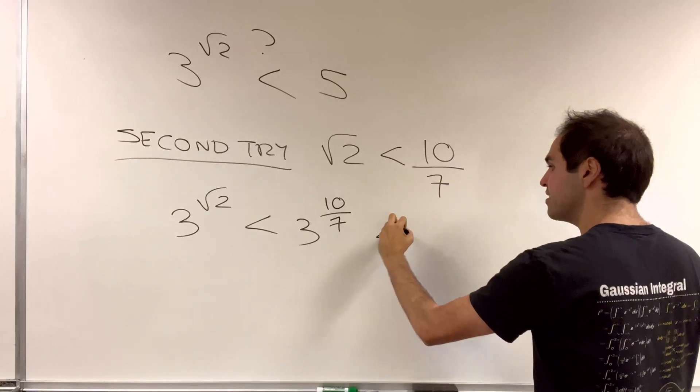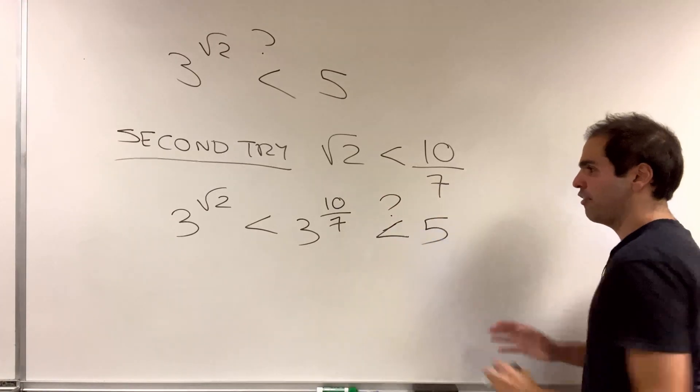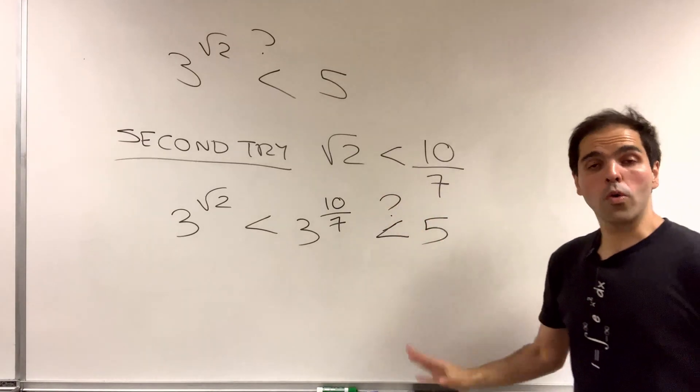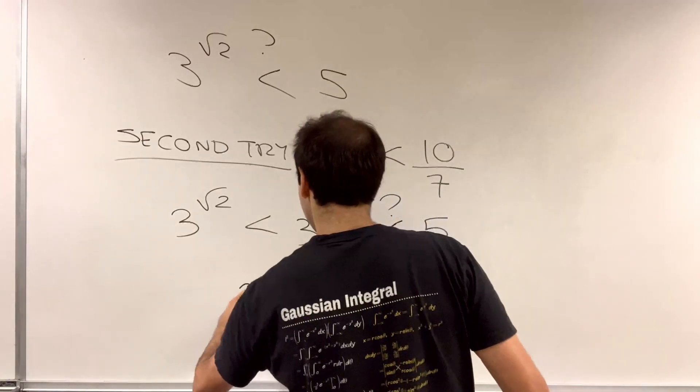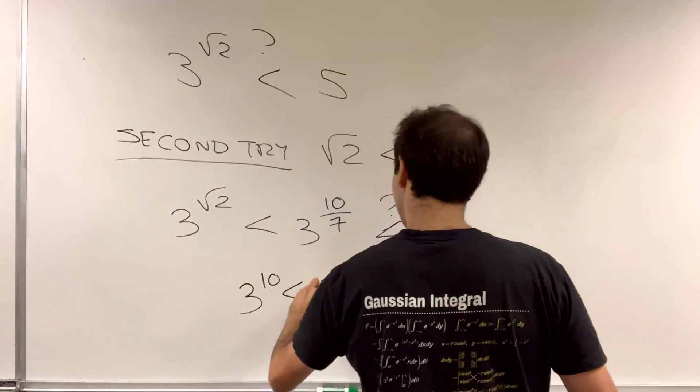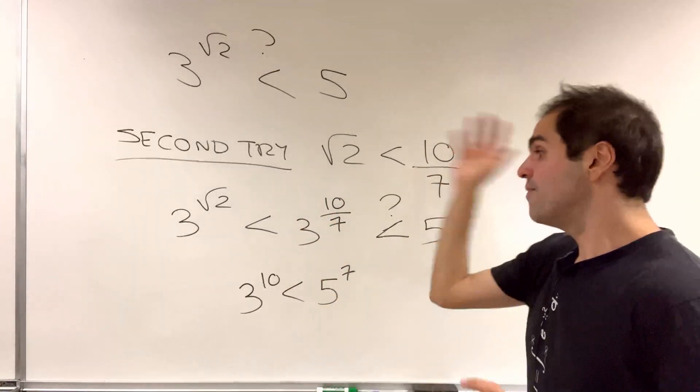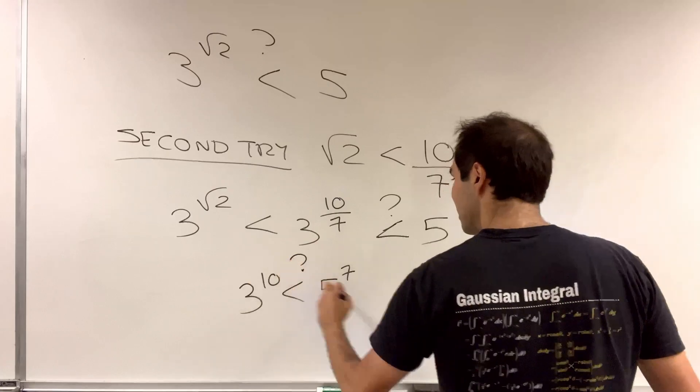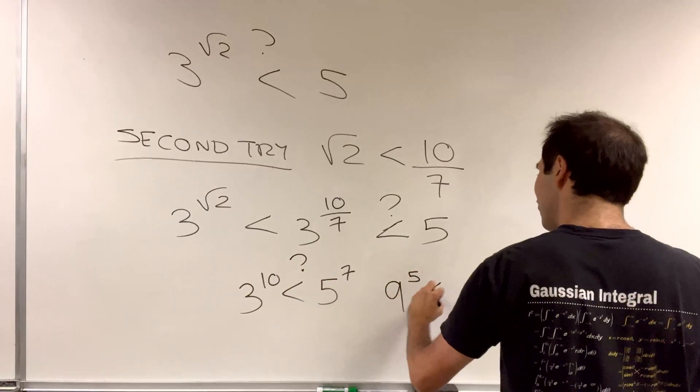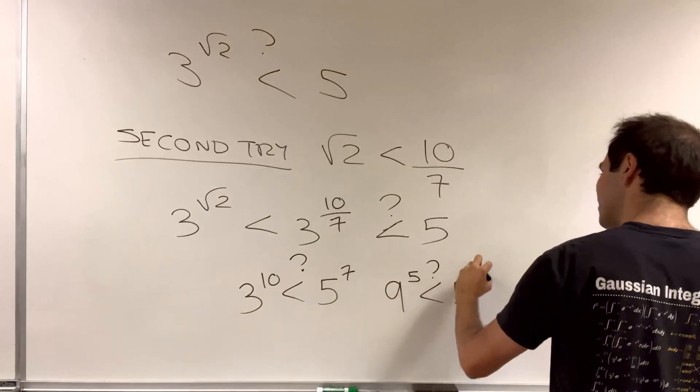And the question now is, is this less than 5? Or in other words, is 3 to the 10th less than 5 to the 7th? Or is 9 to the 5th less than 5 to the 7th?